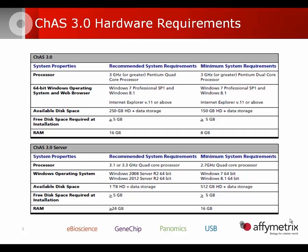We're going to walk through a handful of slides on some background information, the first being the hardware requirements surrounding CHAS 3.0. The top panel shows the recommended and minimum system requirements needed to install and run CHAS 3.0 on your local laptop or workstation. The bottom panel shows the recommended and minimum system requirements to install CHAS 3.0 onto a server. You will need a 64-bit OS and Windows 7 or 8.1. CHAS 3.0 has discontinued the 32-bit browser-only options, so we'll be using the 64-bit operating system only.